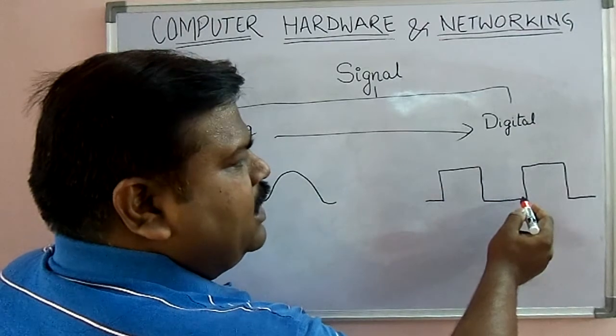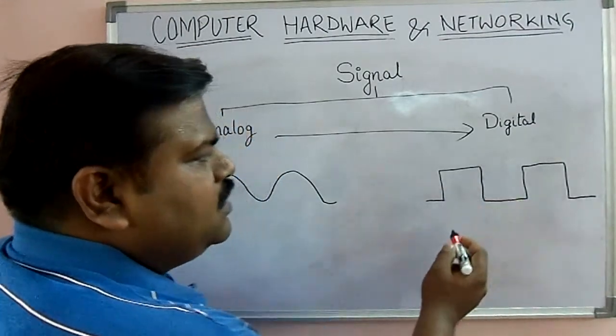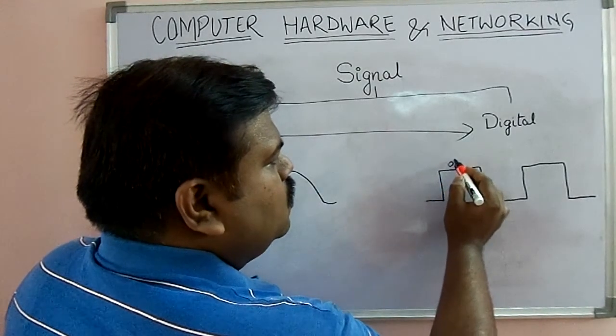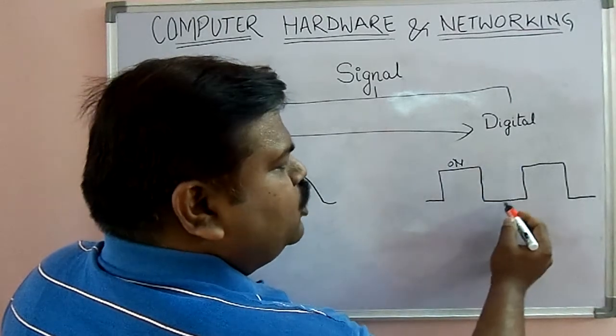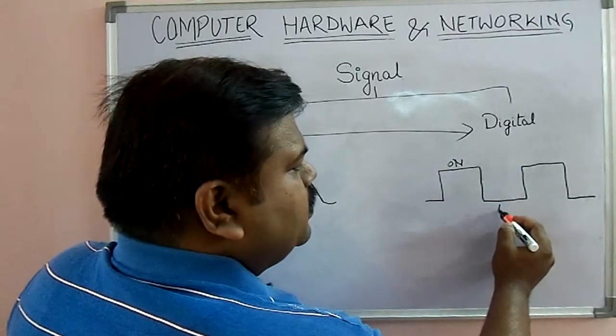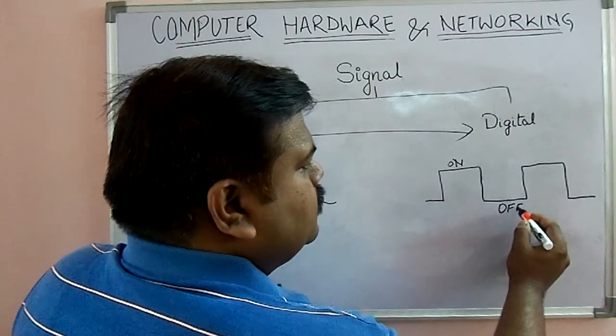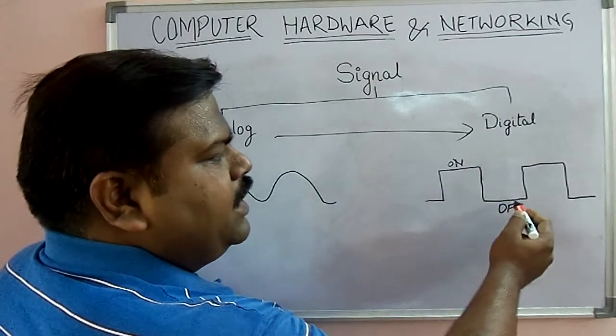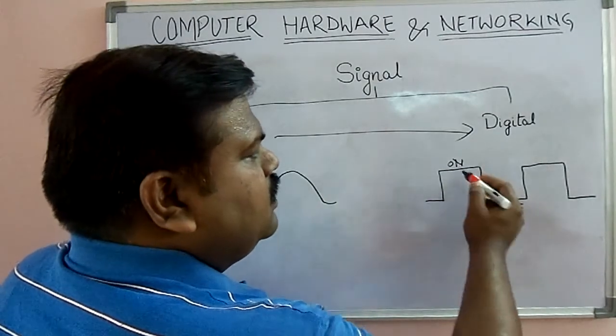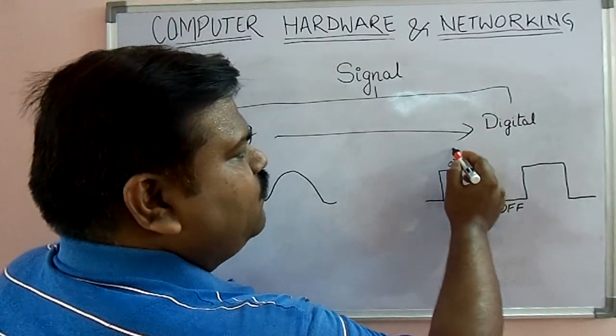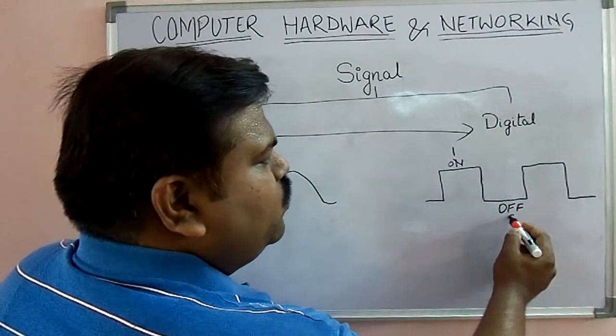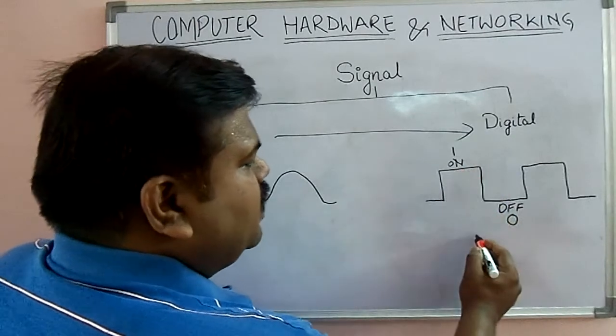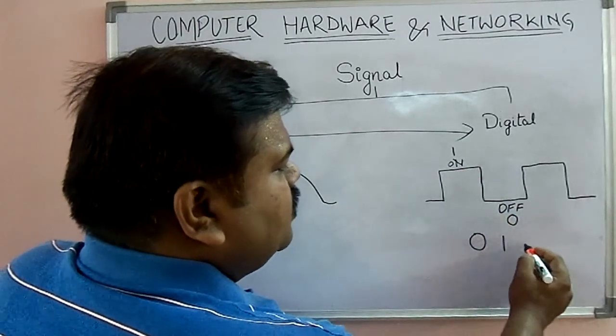It means this position is on position and this position is off position. It means here we get signal, here we didn't get signal. So we can say on position is known as 1 and off position is known as 0. From here itself this 0 and 1 comes.